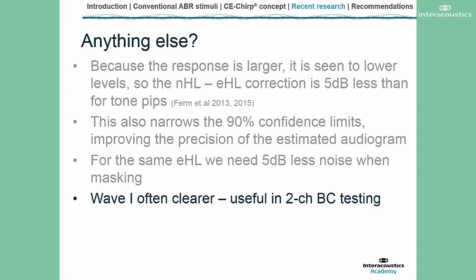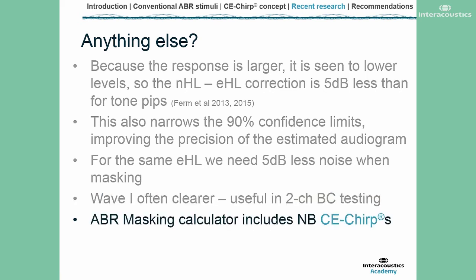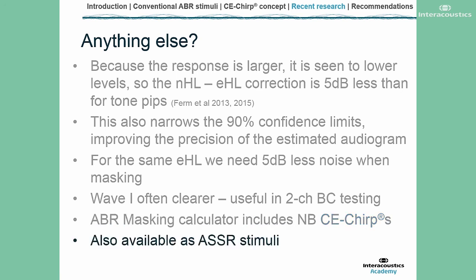We also find that wave one is often clearer, which is useful in two-channel bone conductor testing. In England, there is a masking noise calculator developed by Guy Lightfoot to give us an idea of how much masking noise we actually need, and this calculator also includes figures for the narrowband CE chirps. One other thing is that narrowband CE chirps are also available as an ASSR stimulus.